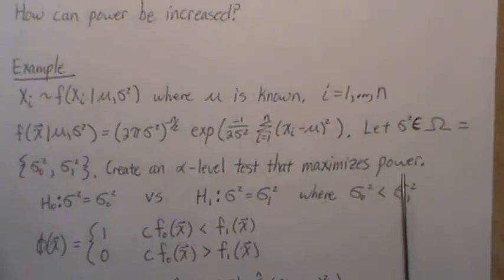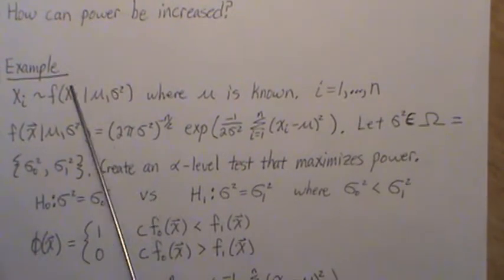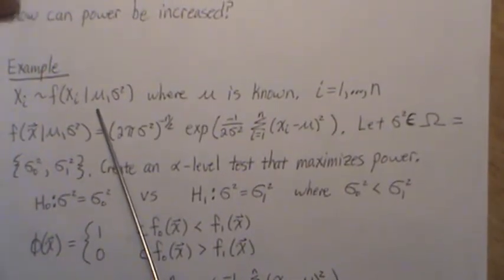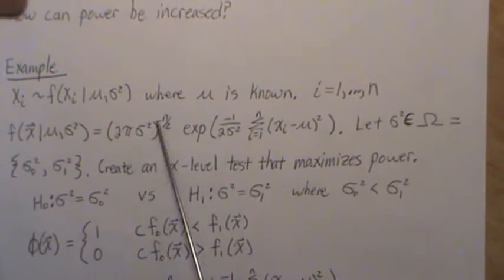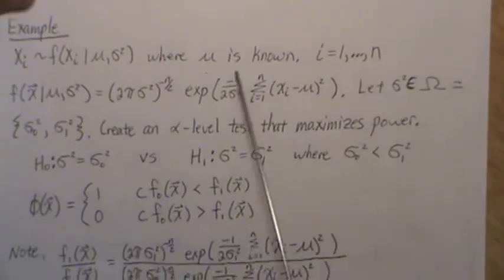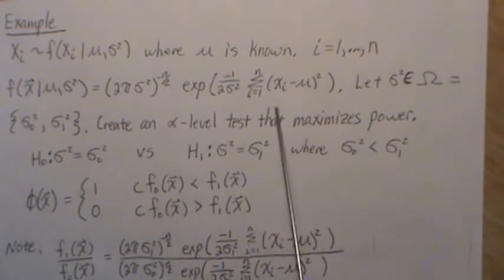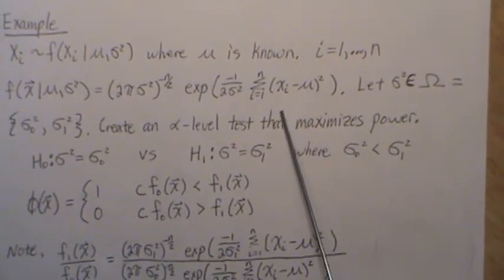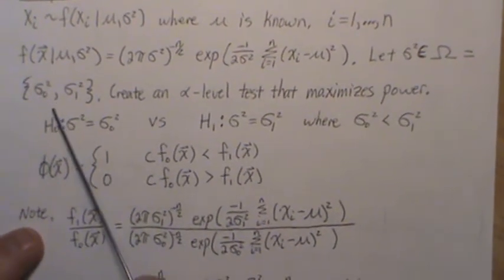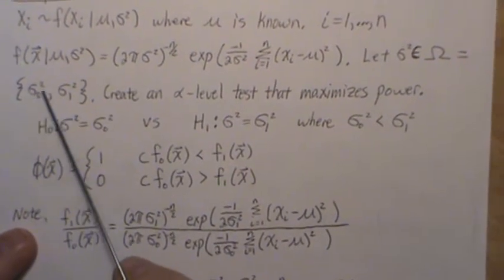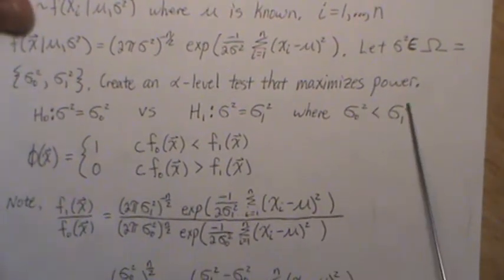Now let's look at another example. Let Xi be distributed as a normal distribution, but here we assume we know mu and that sigma squared is unknown. Sample size n; the joint density is the product of those individual normal distributions. Let sigma squared be in the parameter space omega but have only two values: sigma naught squared and sigma one squared. We want to create an alpha level test that maximizes power.